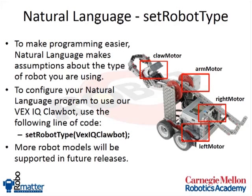Inside of natural language, the first line of code is set robot type. All this line does is tell the program what devices are connected to our Clawbot. We tell our robot we're using a Clawbot, and the natural language system will intelligently go through and connect all of the motors and name them with the correct names. It's an easy way to get started.